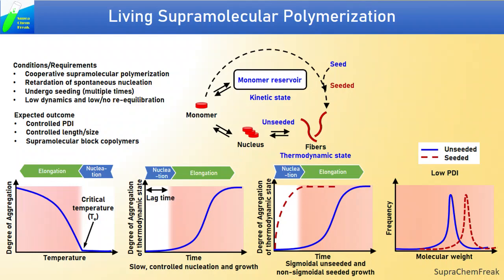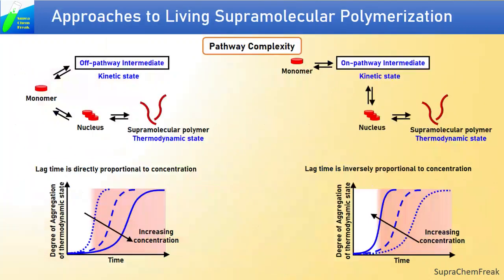Interestingly, the structural aspects can be easily controlled by variation of seed to monomer ratio. There are few approaches to obtain living supramolecular polymerization. The first is using pathway complexity, where the kinetic state can either be an off-pathway intermediate or an on-pathway intermediate.